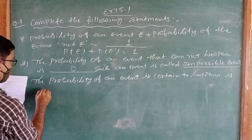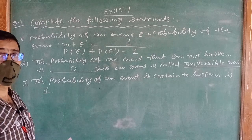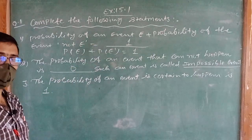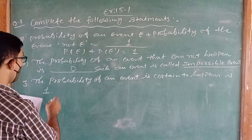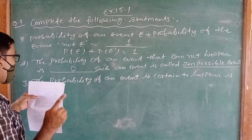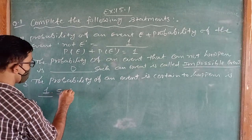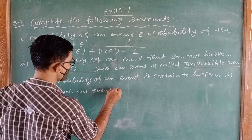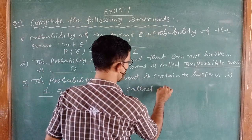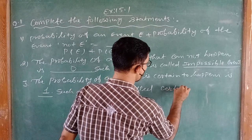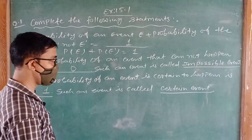The probability of a certain event — one that is confirmed to happen, like the sun rises in the east or the sun sets in the west — is 1. Such an event is called a certain event.